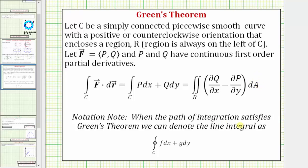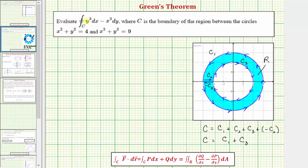When the path of integration satisfies Green's Theorem, we can denote the line integral with a little circle in the middle of the integral symbol. Going back to our example, notice how because the integral symbol does have this circle, we know the curve C satisfies the conditions of Green's Theorem.